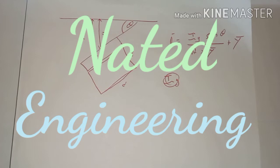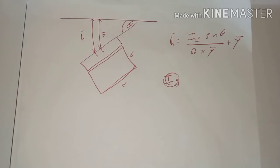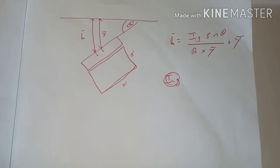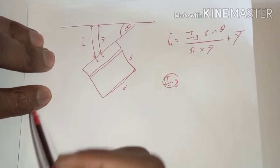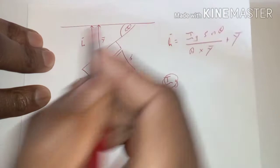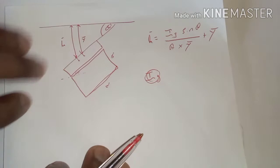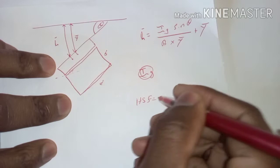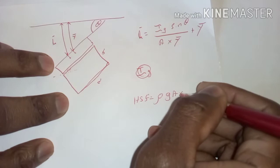Hello everyone, welcome back to Native Engineering. We are still on hydrostatic forces, and today we want to look at what we call the general case of hydrostatic forces, which is where we are now having an object that is completely submerged in water at an angle. As you can see, this particular object is at an angle of theta. So how do we deal with an instance where we are having this type of scenario?